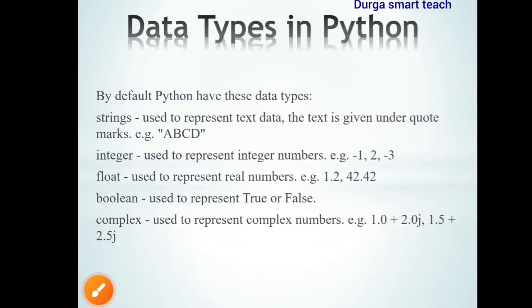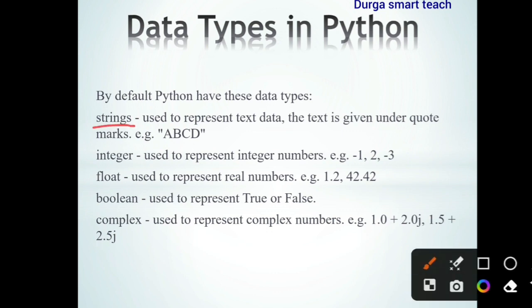Hello students, welcome to my channel. Today I am going to discuss data types in NumPy arrays. In Python, we all know there are default data types: string, integer, float, boolean, and complex.